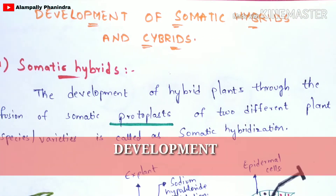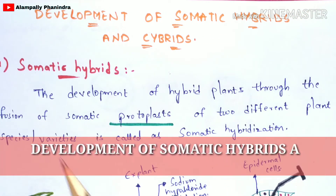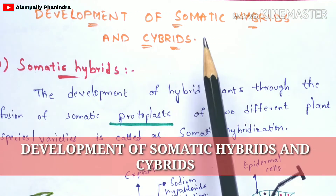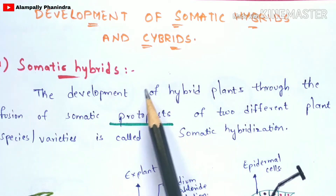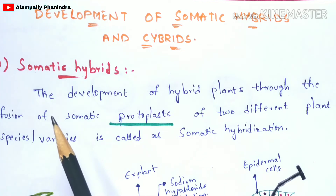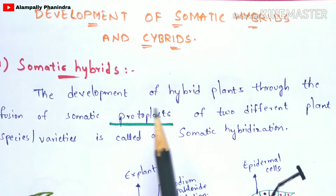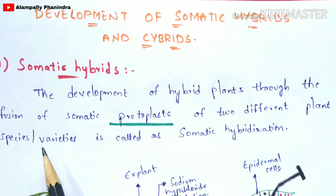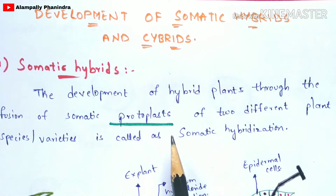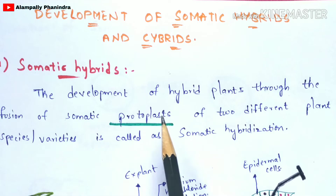In this video, let us discuss about the development of somatic hybrids and cybrids. The development of hybrid plants through the fusion of somatic protoplasts of two different plant species or varieties is called somatic hybridization.